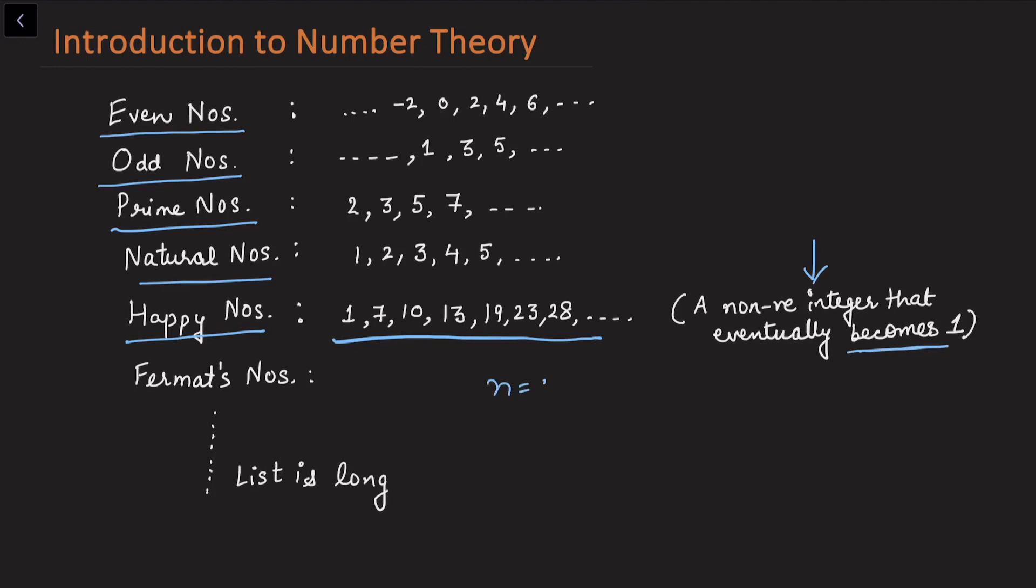For example, consider a number n equal to 28, which is available in the list. This is called a happy number. Let's see how this is a happy number. Pick up the individual digits in the given number. I'm going to take 2 squared and 8 squared. This value is 4, this is 64. Sum these two quantities and I'm going to get the next number, which is 68.